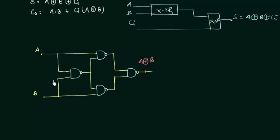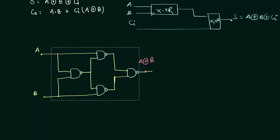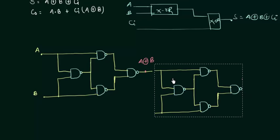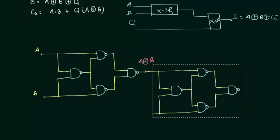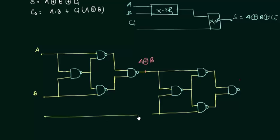Now we want the XOR operation with CI, so it's very simple. We are going to make this arrangement again, so let me copy it. We copy this part and paste it. This input is our CI. The output here will give you A XOR B XOR CI, and this is our sum. Now we have implemented the sum; it is time to implement the carry output.